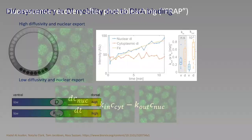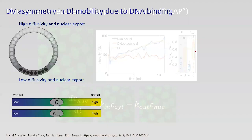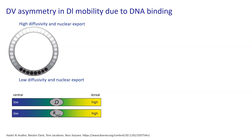So when looking at different parts of the embryo and measuring the mobility of dorsal — either how fast it can diffuse or how fast it can get outside the nucleus — there's a gradient. You have lower diffusivity and lower nuclear export on the ventral side, higher diffusivity and higher nuclear export on the dorsal side. The reason dorsal is slower on the ventral side, only in the nucleus, is because dorsal in the nucleus is bound to the DNA.